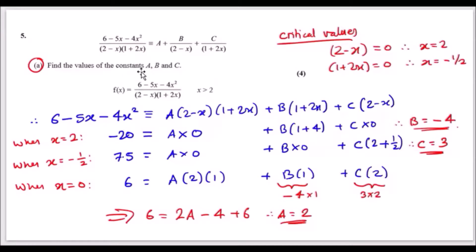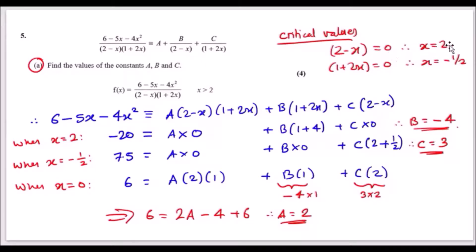Find the values of constants a, b, and c from this type of partial fractions. Before tackling this, when you have something underneath like this and they want you to partial fractions, always find the critical values of x — in other words, see when these equal zero. For example, 2 minus x equals zero gives x equals 2, and the second term gives x equals negative half. These are your key values for later.